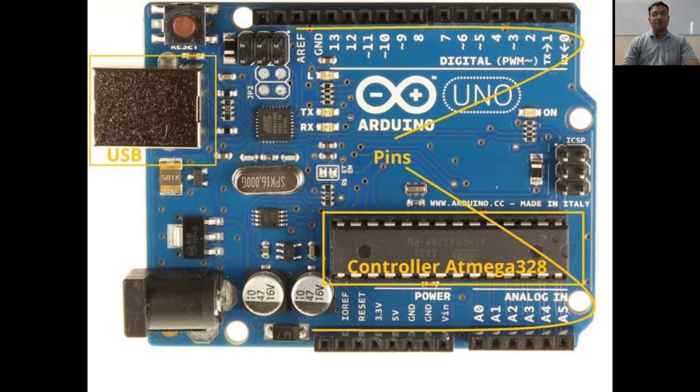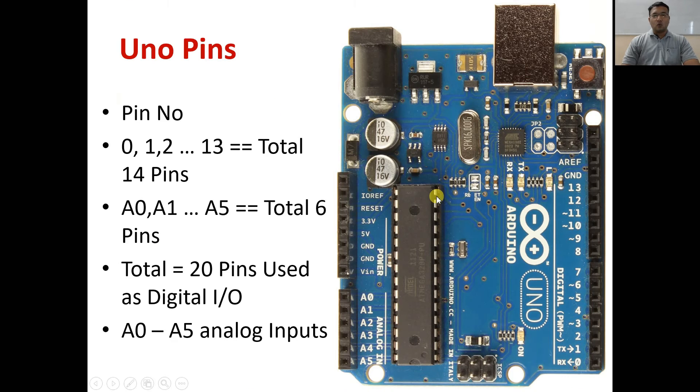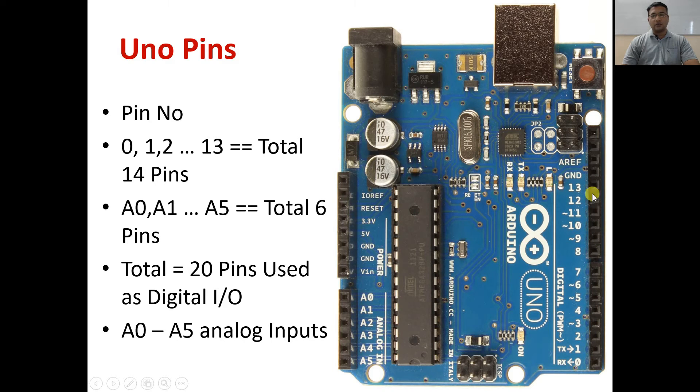As we have seen, Arduino Uno has got 0 to 13, a total of 14 pins on this side, and A0 to A5, a total of 6 pins on this side. All in all, we have total 20 pins which can be used as digital I/O, plus A0 to A5 are the pins which you can also use as analog input.